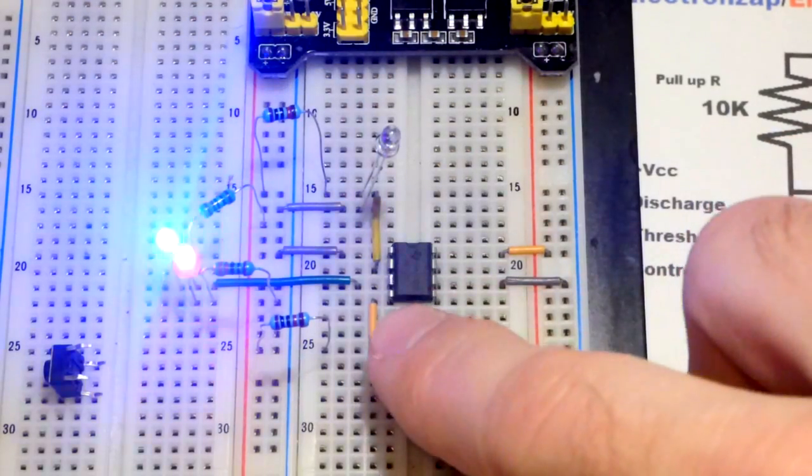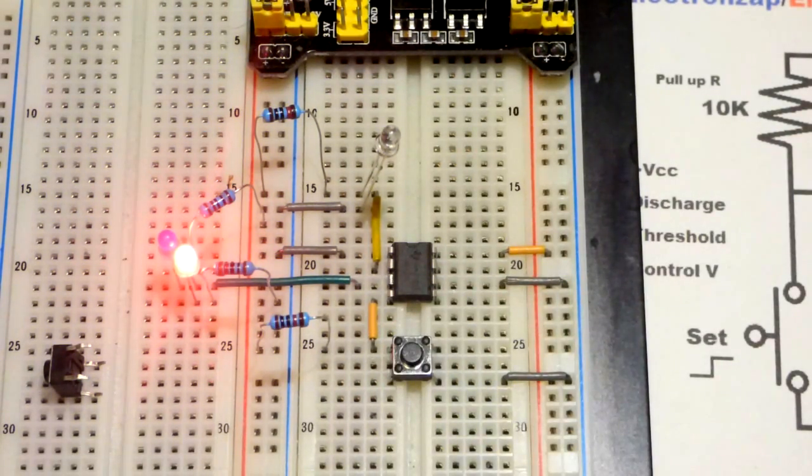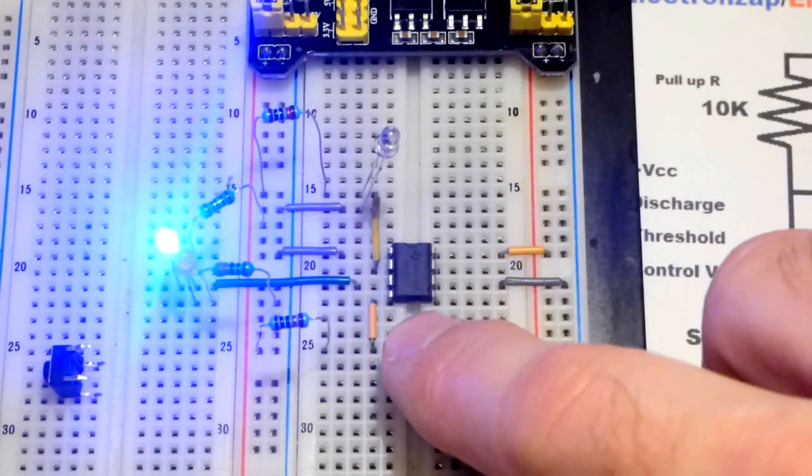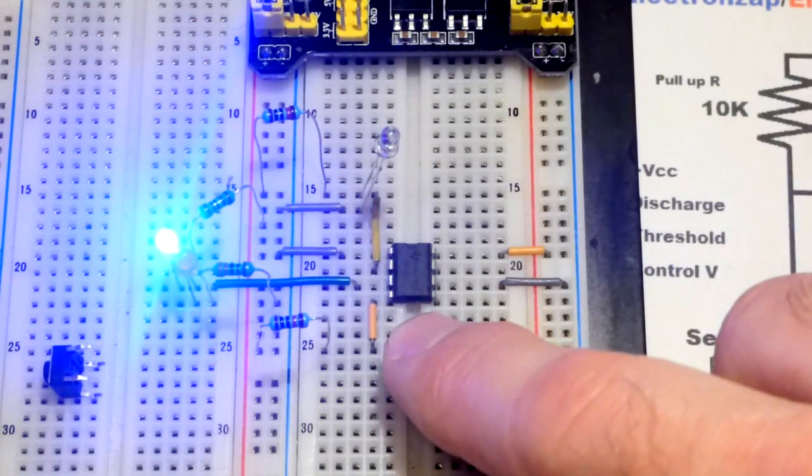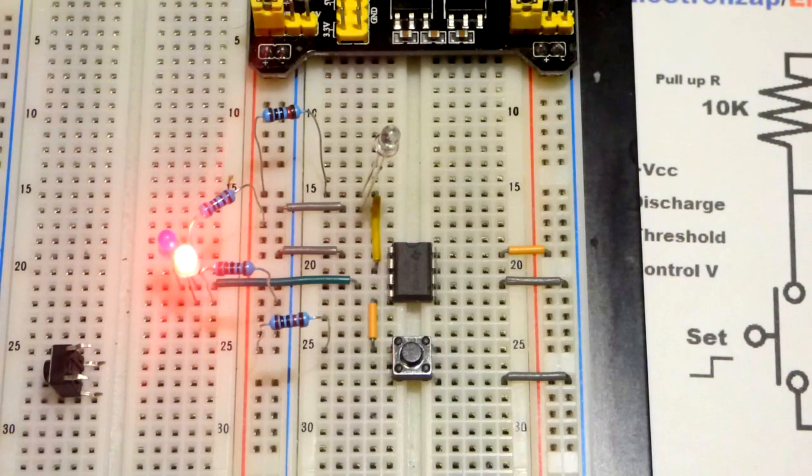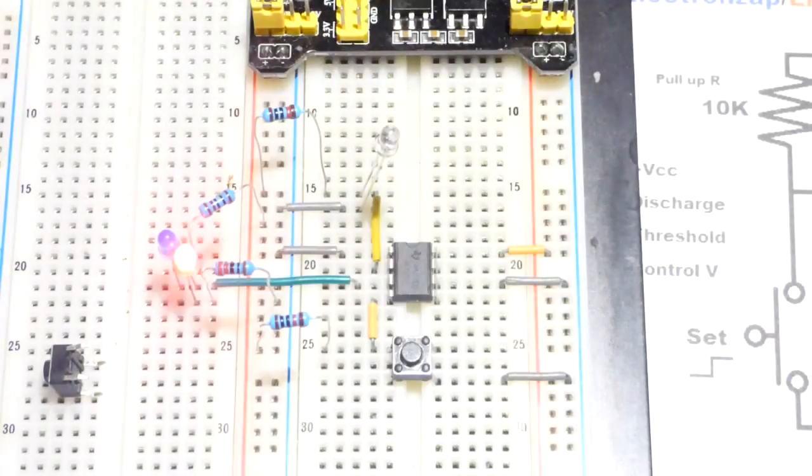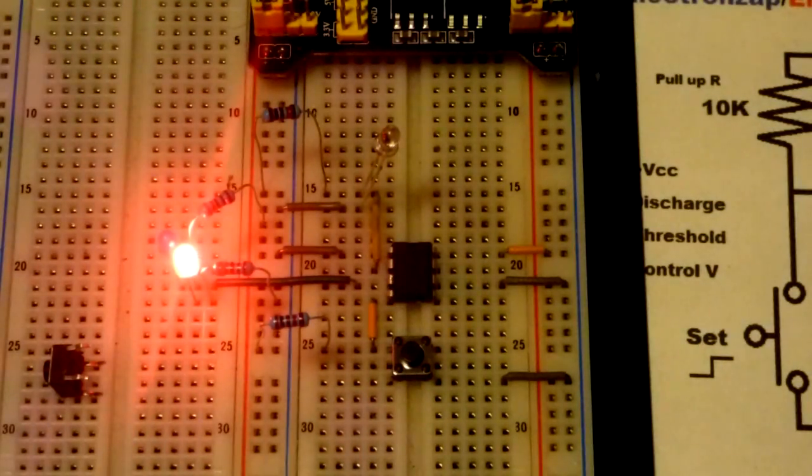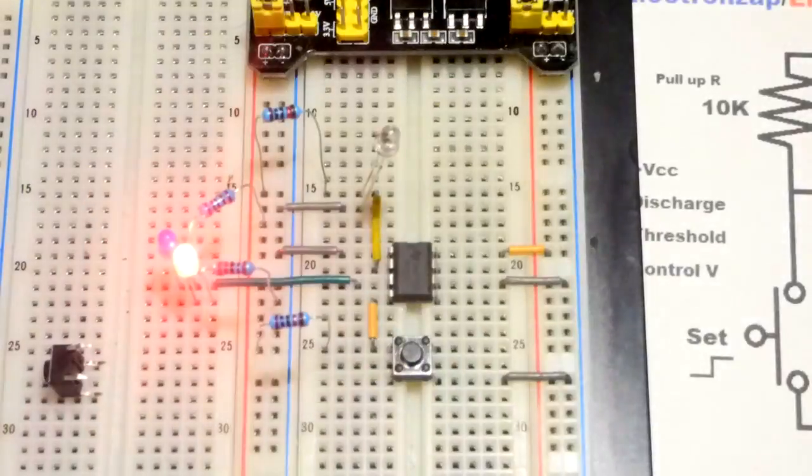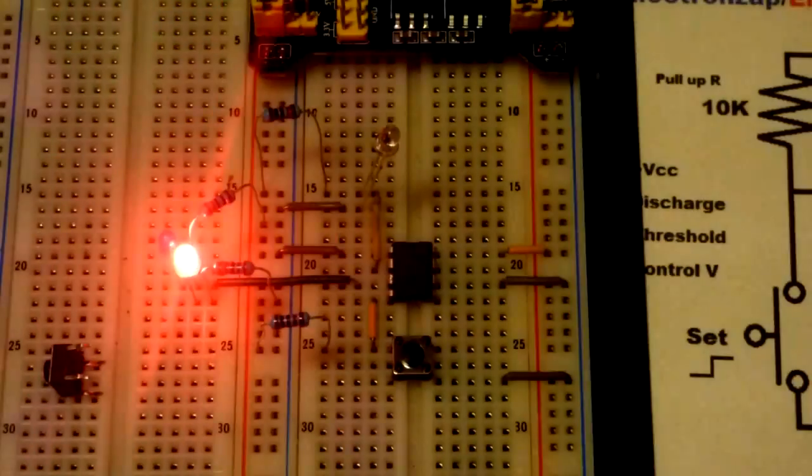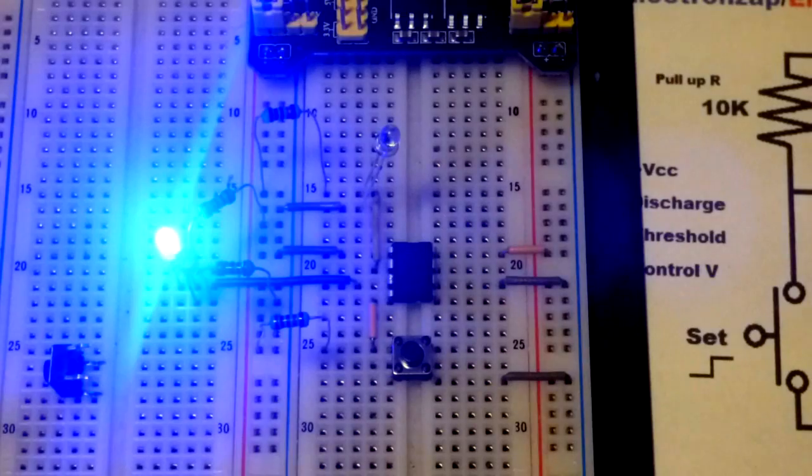The reset pin is the dominant one. If the 555 timer is being reset, it's going to do that no matter what. So it overpowers the set pin. But there you can see we got enough light there. And so if you want something that can tell if a light came on at any point, because now we can turn the light off again and the output stays high. It doesn't matter how much we change the light. The output is going to stay high until we reset it.